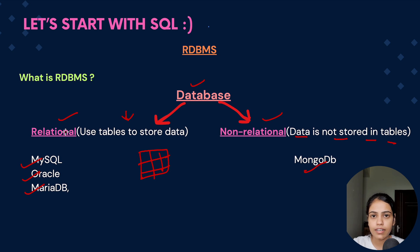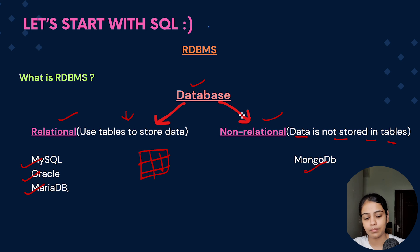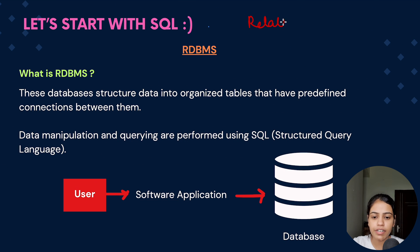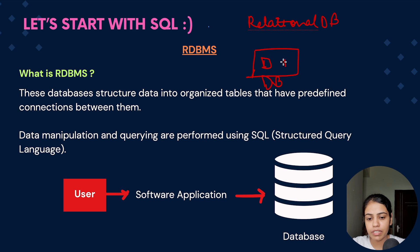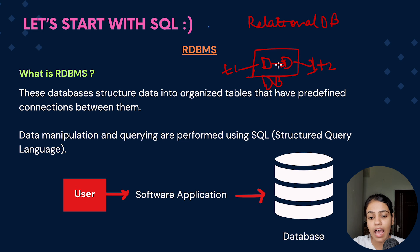So relational databases are databases where data is stored in the form of tables. Non-relational databases follow some other pattern like key-value pairs to store the data. In a relational database, there could be multiple tables — T1, T2 — and the tables present inside the database can have a relationship between them. That is why it is called relational — because the tables inside the database can establish a relationship between them.